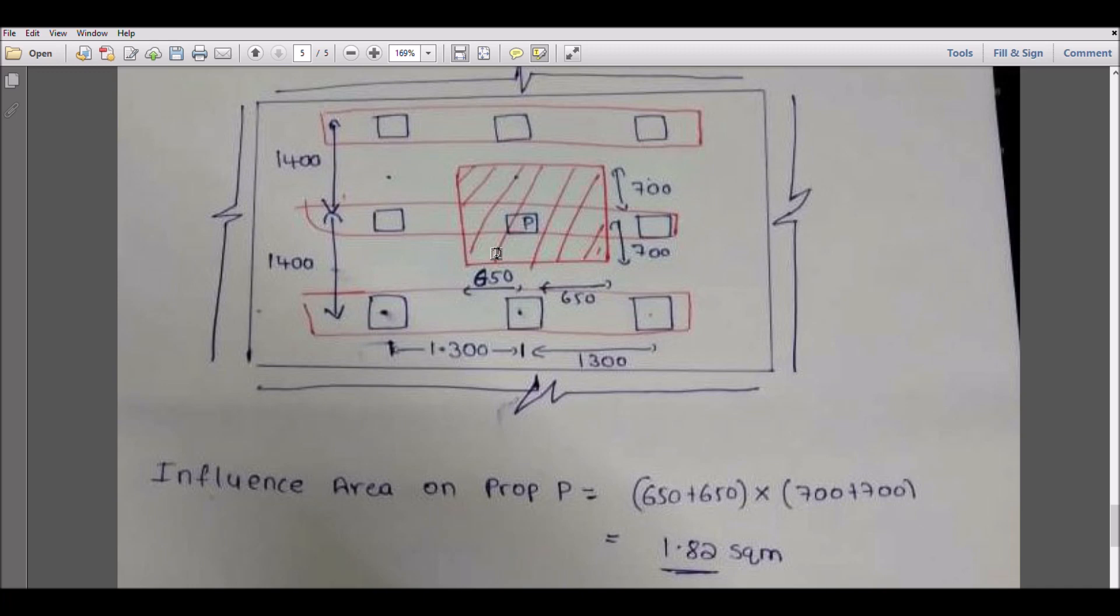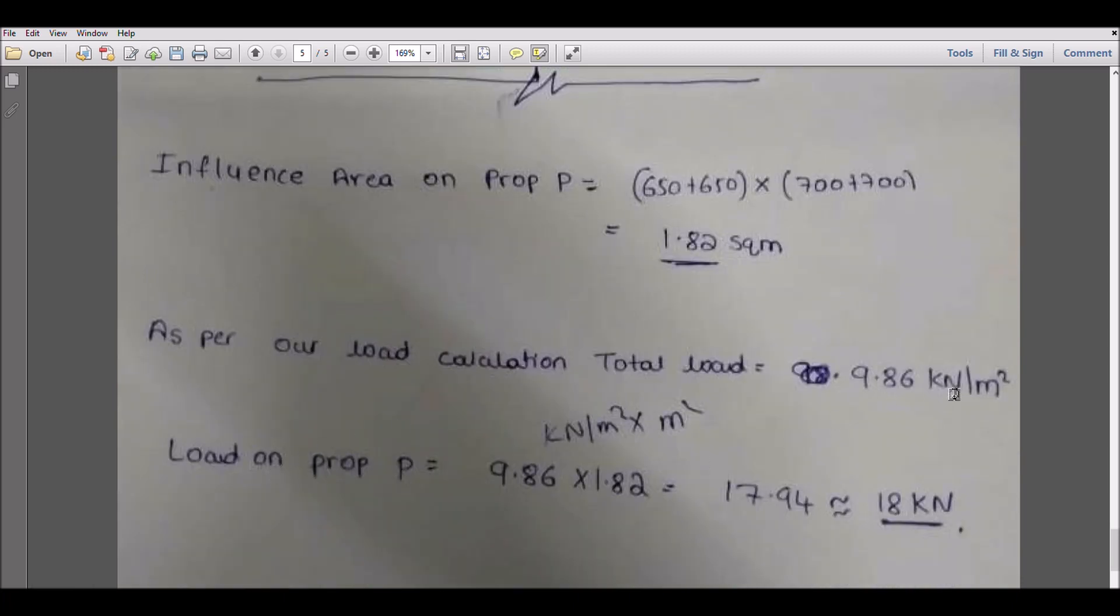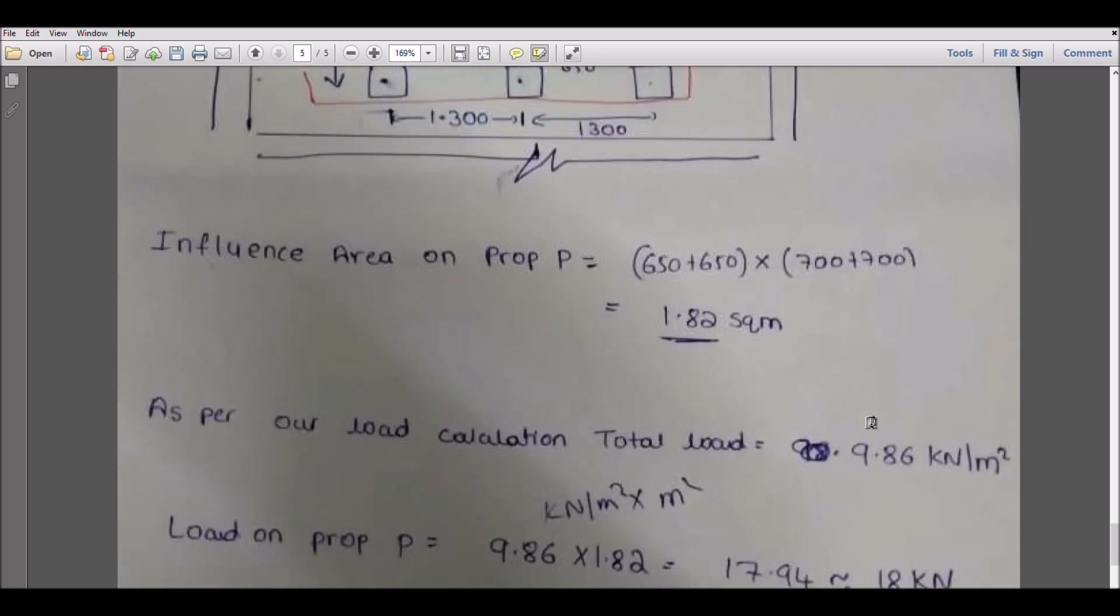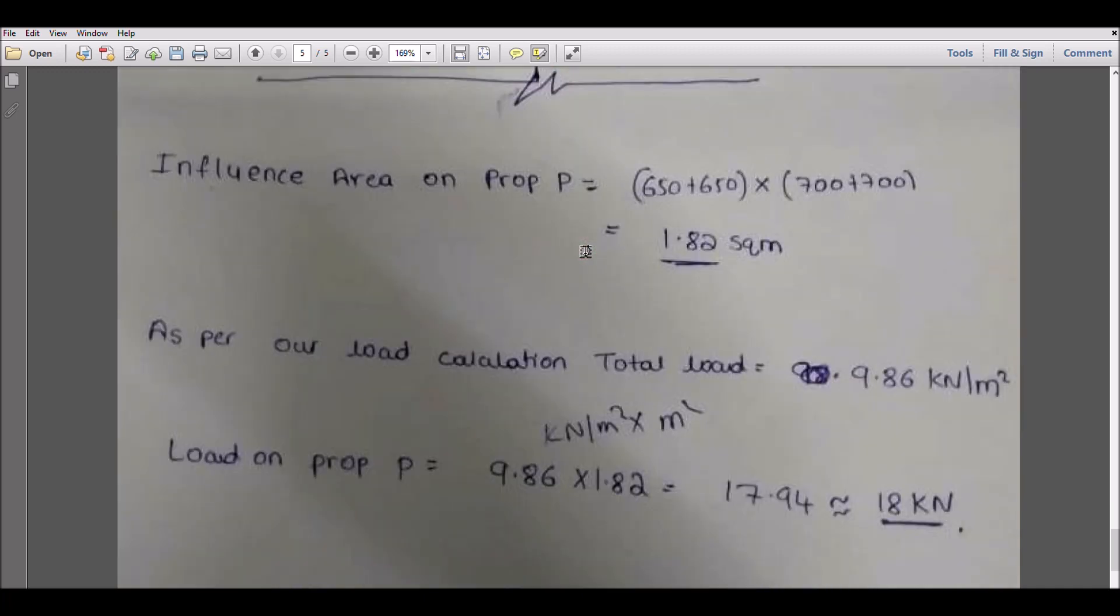Now you might ask which load we have to put to get the proper loadings. This is nothing but the total load, which is the concrete load, 9.86, consisting of dead load, live load, and the formwork load. If you multiply with 1.2, you will get approximately 18 kilonewton on each prop. On this value, you can decide what is your prop capacity at the height. If your floor-to-floor height is 3 meters and this prop opening is 2.4, then you have to check at 2.4 whether this load is sustainable by the prop or not.